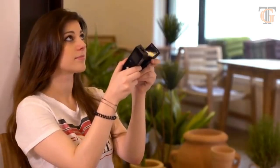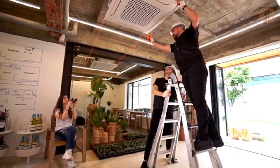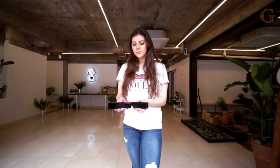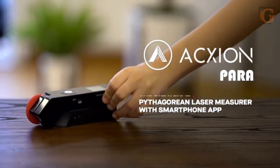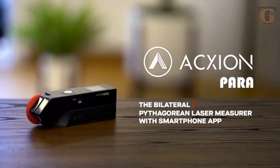Are you still measuring in risky situations? Do you still need someone to help you measure lengthy distances? How do you measure objects that cannot be measured by the ordinary tape measure? Here is a new way of measuring. Introducing Axion Para.